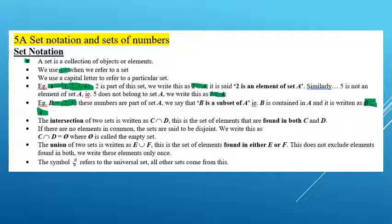The intersection of two sets uses this symbol — you need to learn this. If we write C intersection D, this is the set of elements found in both C and D. Both — that's the key thing. These elements belong in C and also belong in D. If there are no elements in common, the sets are said to be disjoint. We write this as the intersection of C and D equals the null set.